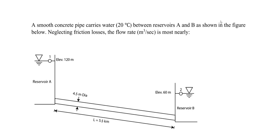I want to do an FE type question where we use the Hazen-Williams equation and the Manning equation as well. These will be two questions that we will solve step by step. We will begin by using the Hazen-Williams equation to determine the flow rate. A smooth concrete pipe carries water at 20 degrees Celsius between reservoirs A and B as shown in the figure below.